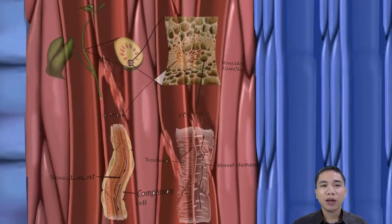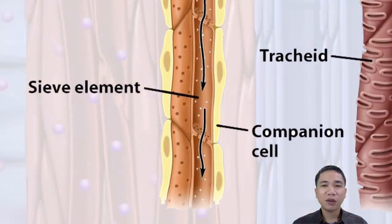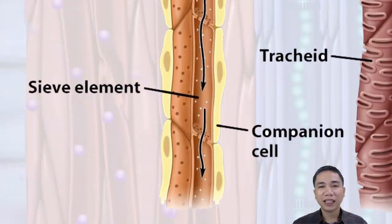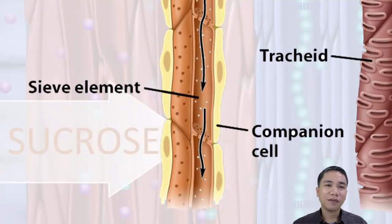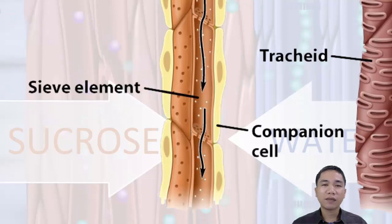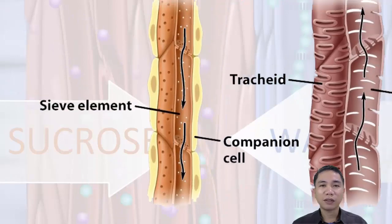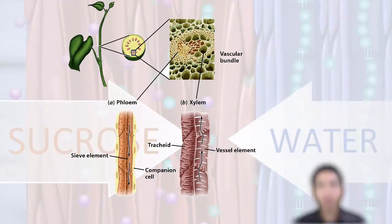Sieve tube members have no nuclei at maturity, but they retain the cytoplasm that is very active in the conduction of solutes. In some experiments, removing the companion cell results in the death of the sieve tube. Companion cells thus share their metabolic products with the sieve tube members that dedicate their lives to solute transport.